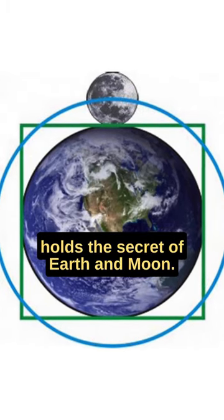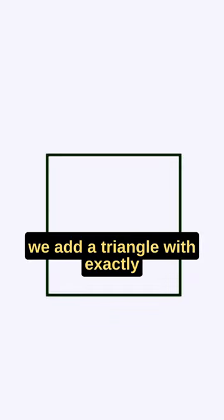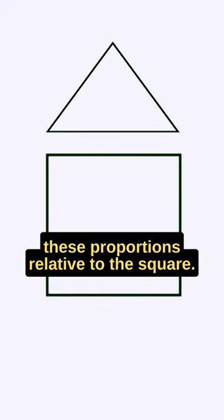Watch how this simple geometry holds the secret of Earth and Moon. Imagine you have a square. Now, we add a triangle with exactly these proportions relative to the square.